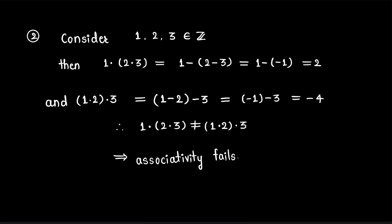For the second axiom, consider three integers 1, 2, and 3 in Z. Then (1 dot 2) dot 3 by definition equals (1 minus 2) minus 3, which equals minus 4, and 1 dot (2 dot 3) equals 1 minus (2 minus 3), which equals 2. So (1 dot 2) dot 3 is not the same as 1 dot (2 dot 3), therefore associativity fails. Thus the given set G with the given binary operation will not form a group.